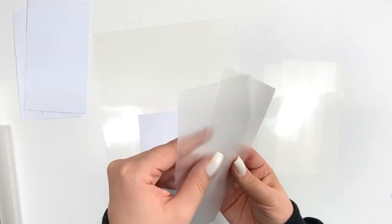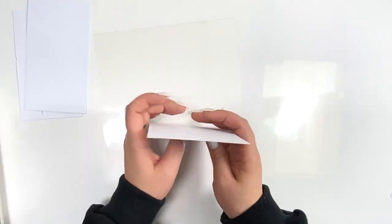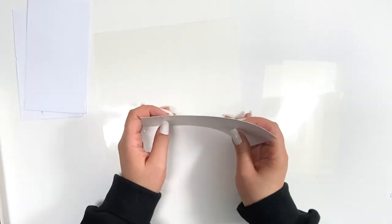After that we take the white paper which we cut as well and then we put these three of them in another laminating sheet.